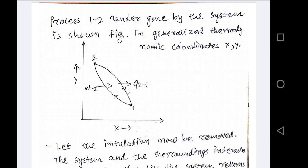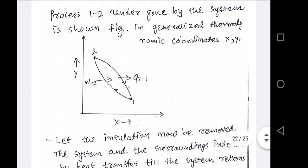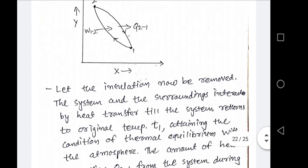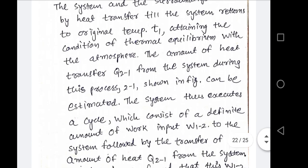Recall the definition: a thermodynamic cycle occurs when a series of state changes takes place such that the final state is identical to the initial state. As per this definition, this process is in cyclic form — it is a thermodynamic cycle.